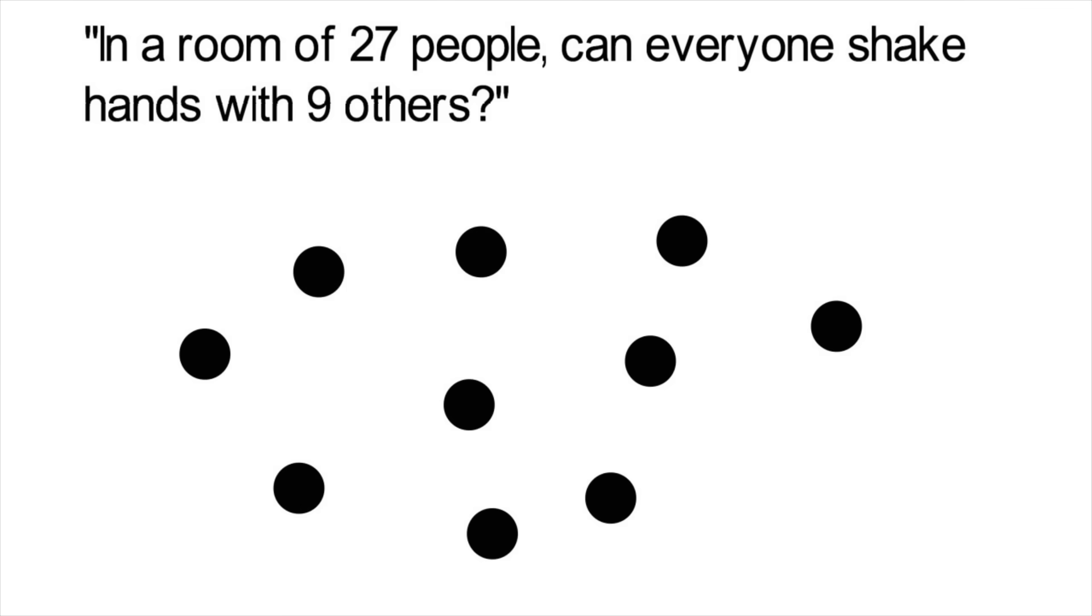Now, if a pair of people shake hands, we can represent that with an edge. So right now, this person shook one person's hand, and so has this other person. The question is, can everyone shake hands with 9 others? To solve this, we only need one piece of background information.